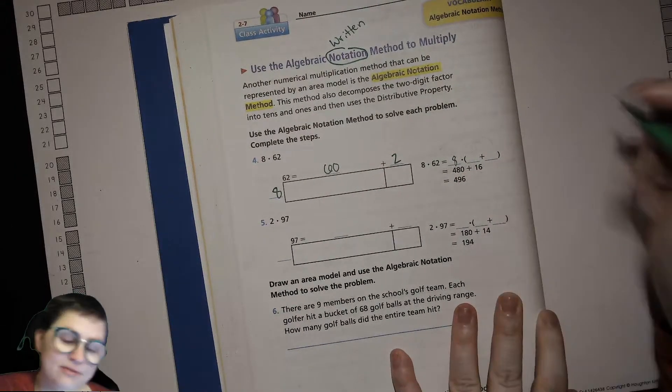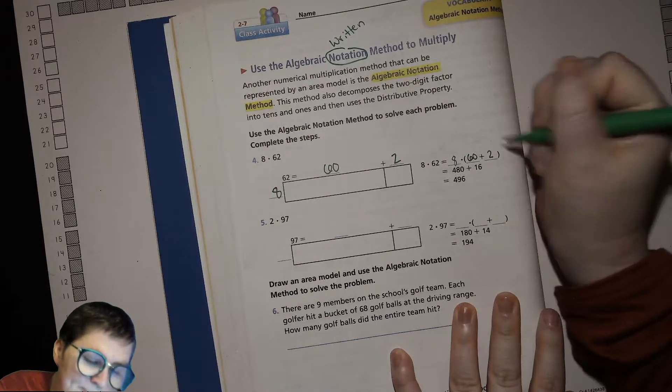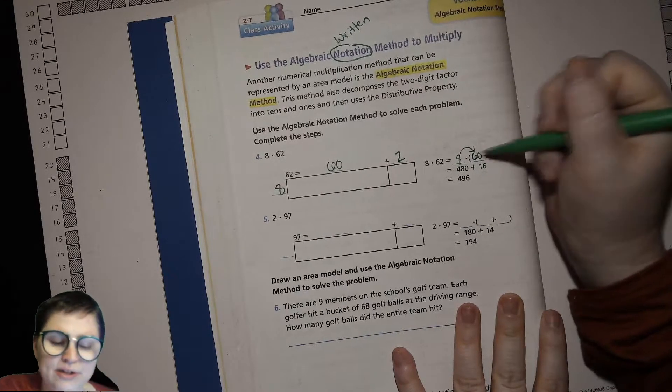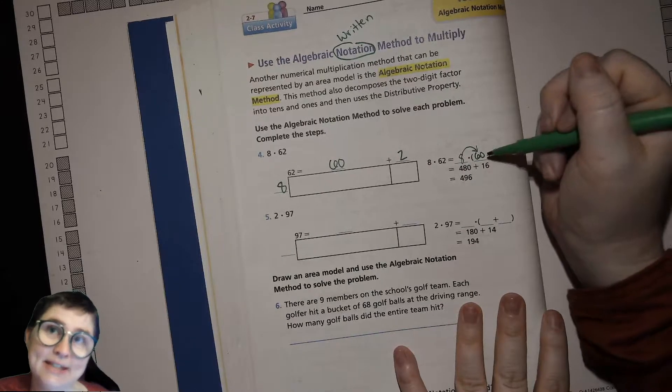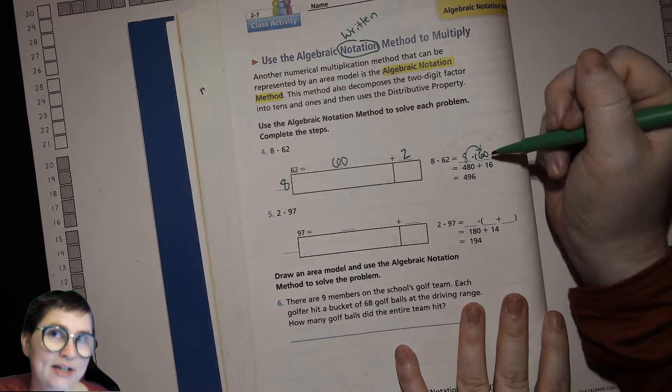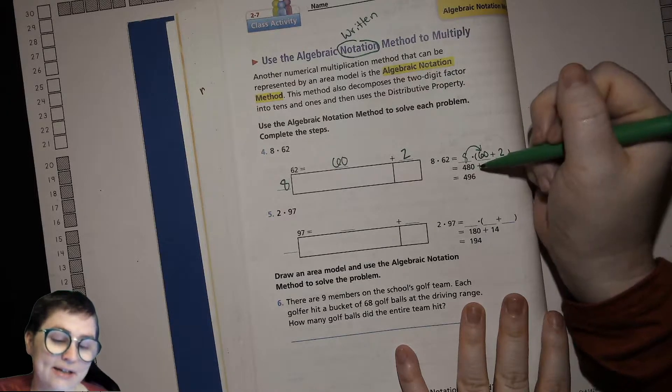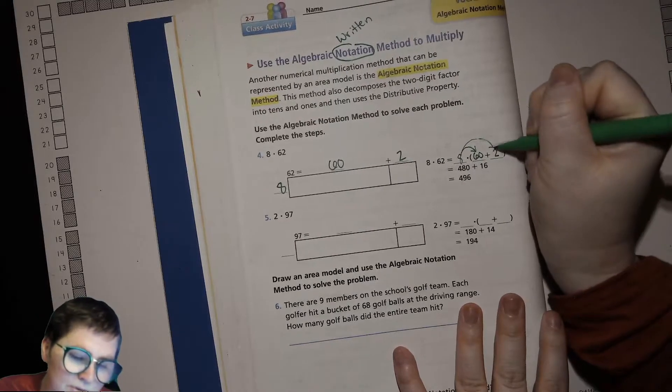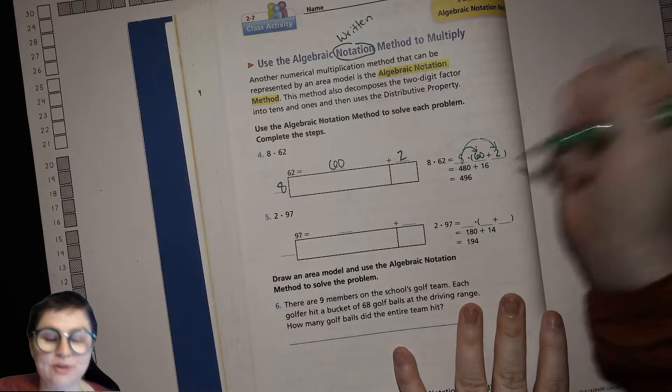8 times 62, our single digit factor goes right there. 62 we're breaking up into the tens which is 60 and the ones which is 2. So the first thing we multiply as we're distributing is the 8 times 60, so 8 times 6 is 48, 8 times 60 is 48 tens so 480, and then 8 times 2 is 16.